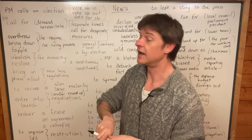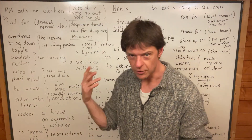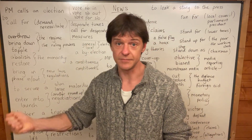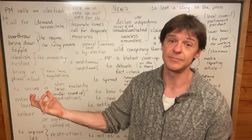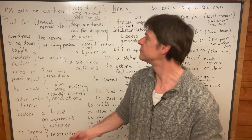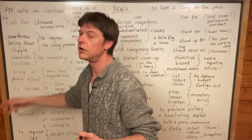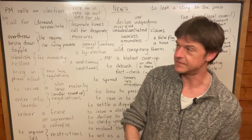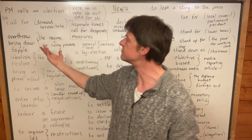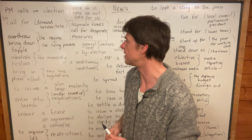I just read in the newspaper that the leader of the opposition - that's the guy who leads the opposing party. At the moment Labour is the opposition and Conservatives are in power. So the leader of the opposition called for the resignation of the Prime Minister. He called for the Prime Minister to resign.